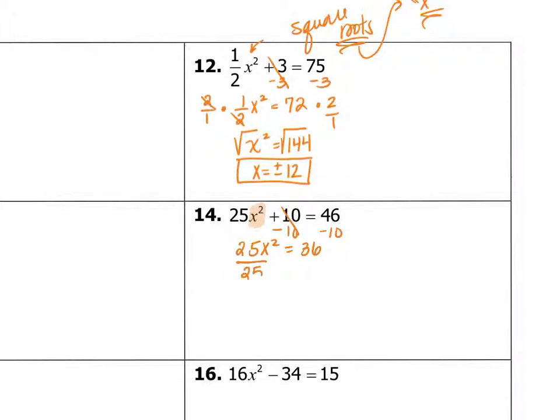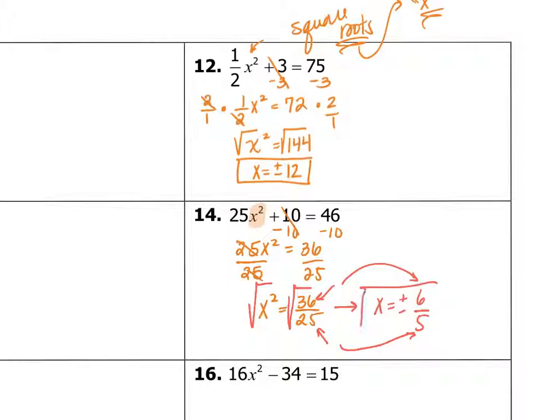Divide 25 on both sides, and we don't want to divide this. We want to just leave it as 36/25. If we take the square root on both sides, you get that x equals positive or negative 6/5, because the square root of 36 is 6, and the square root of 25 is 5.